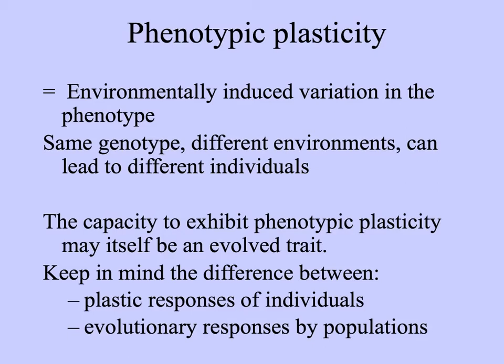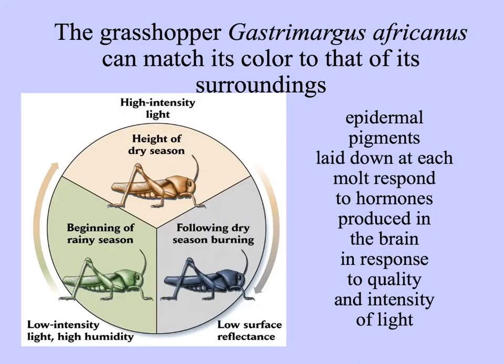Individuals may show plastic responses as they develop, but also, over repeated time, populations may be selected for these sorts of responses, and you can get an evolutionary response in the population. An interesting example is the grasshopper Gastromargus africanus, which lives in a habitat subject to seasonal burning in the dry season. Individuals that develop when the landscape is charcoal-colored grow up black; those that develop during the humid rainy season when green plants are growing turn out green; and those that develop in the dry season when vegetation is turning brown turn out brown.